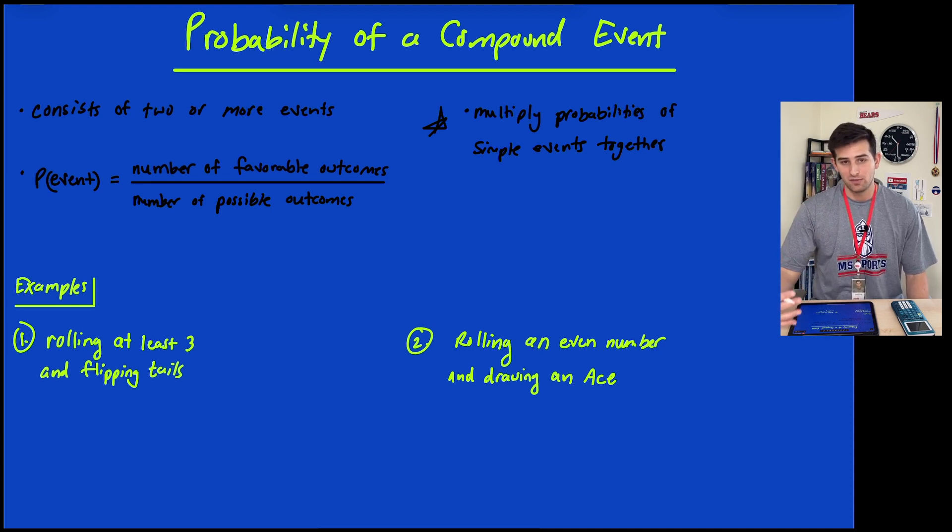The probability of flipping a coin and landing on heads is 1/2 because there are two outcomes and the favorable one is heads. If I want to do that twice, the probability of landing on heads and heads is 1/2 times 1/2, which gives us a 1/4 chance.